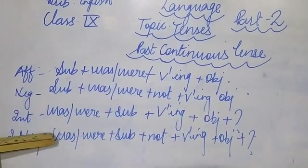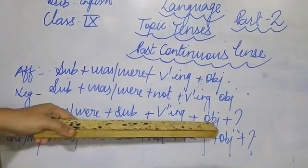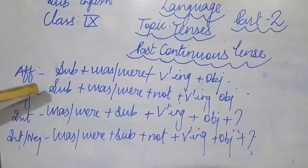And interrogative come negative, was, were plus subject plus not plus first form with ing, object and question mark. So, let's start with some example.